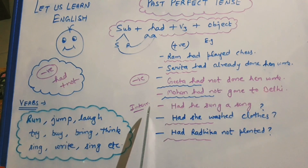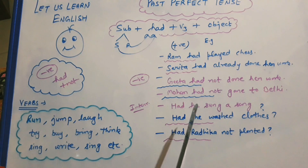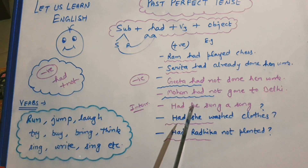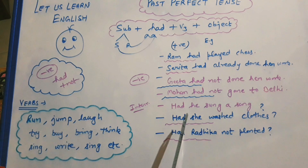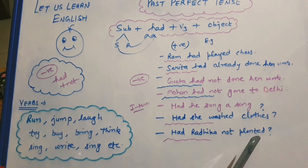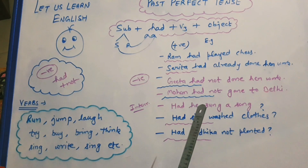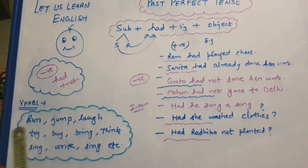In the interrogative sentences, had comes before the subject. Had he sung a song? Had she washed clothes? Had Radhika not planted? So we can make past perfect tenses with the help of these verbs.